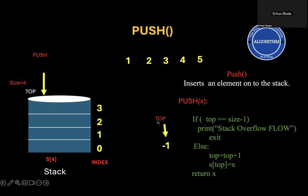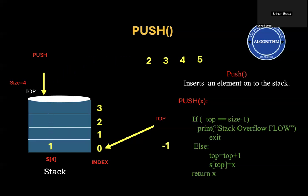If you want to insert the first element into the stack, we have to increment top by 1. Top is currently pointing to minus 1; when you increment by 1, it becomes 0. So top should go and point to 0. Wherever top is pointing, into that index you have to insert your element. The element comes and occupies the first position pointed by top. In the algorithm, when top is not equal to size minus 1, which is 3, we increment top from minus 1 to 0, and into that new slot we insert the element.